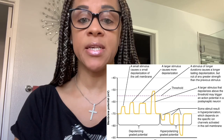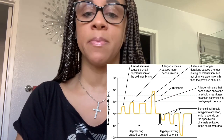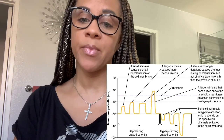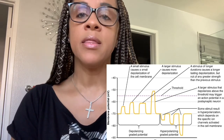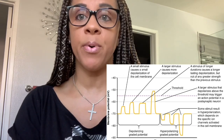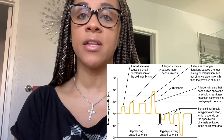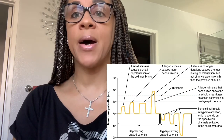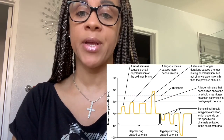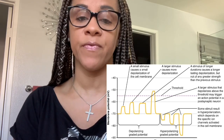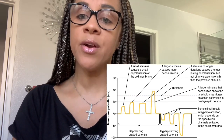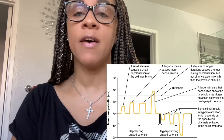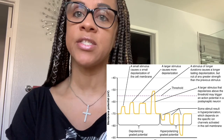It is the receiver of the neurotransmitter message. Then we have the end plate potential, and these are the voltages which cause depolarization of skeletal muscle fibers caused by neurotransmitters binding to post-synaptic membranes in the neuromuscular junction. They are called end plates because post-synaptic terminals of muscle fibers have a large saucer-like appearance.